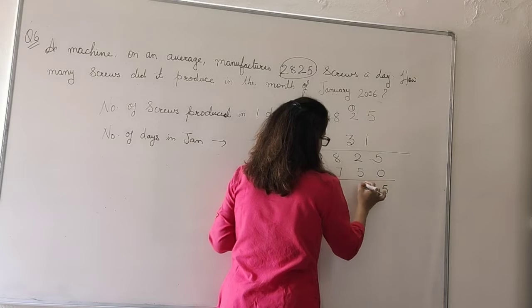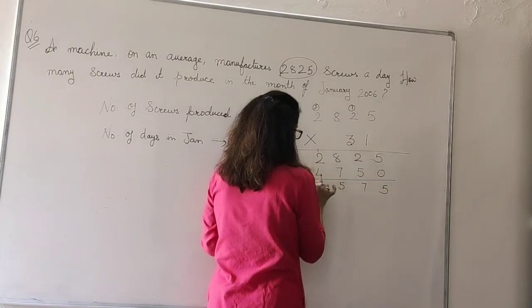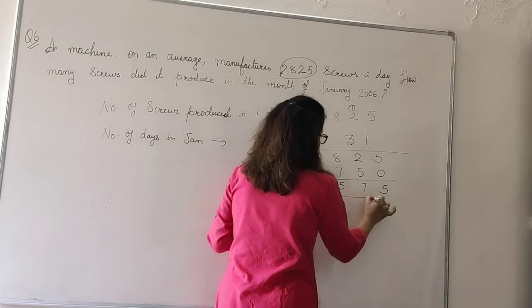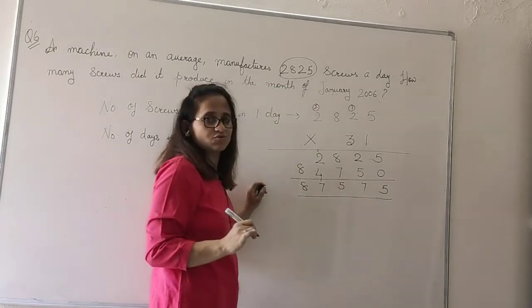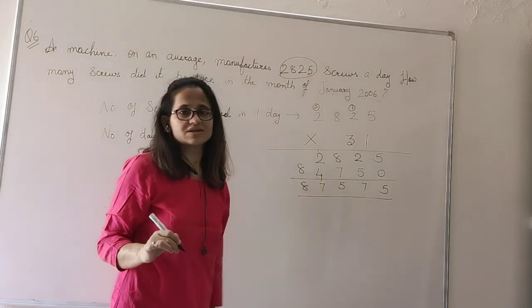Now 5, 7, 15, 7, 8. So how many screws would the machine have produced in January? 87,575.